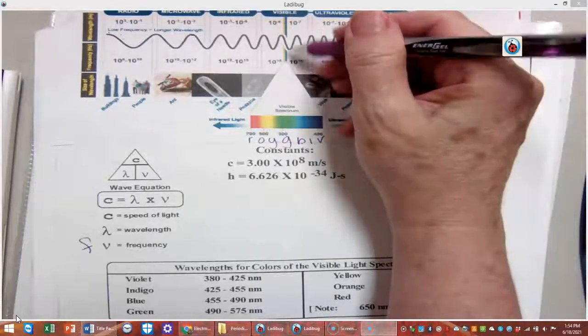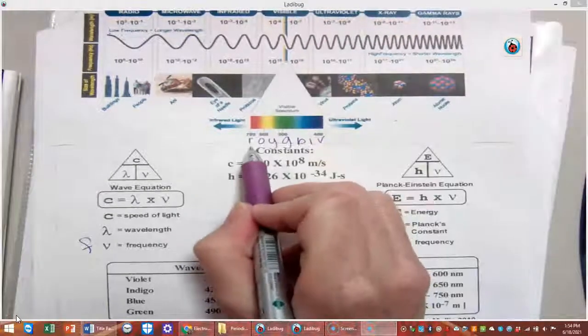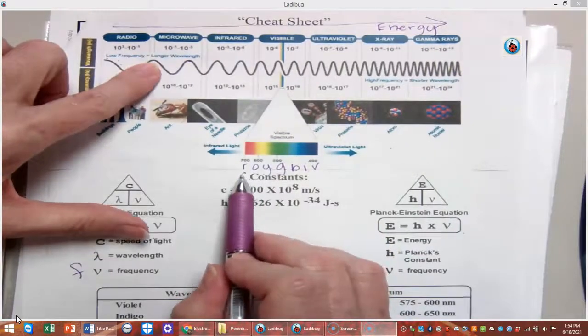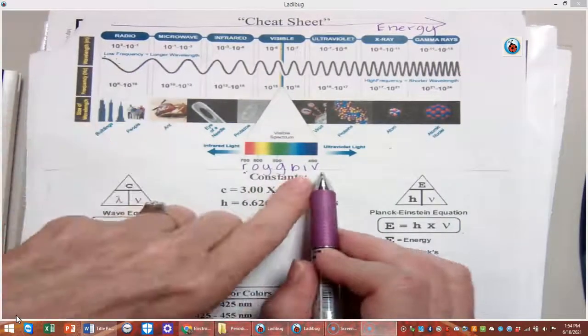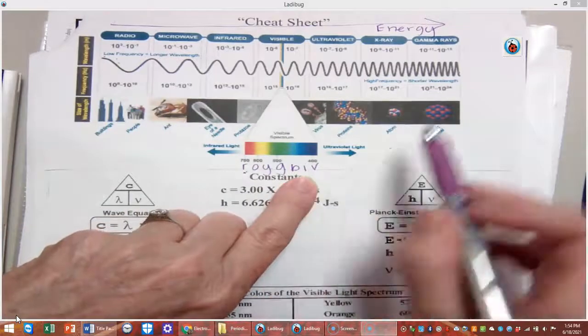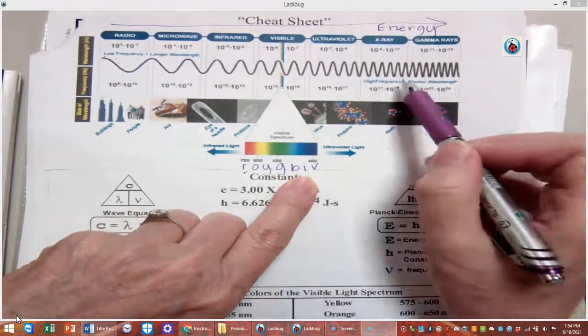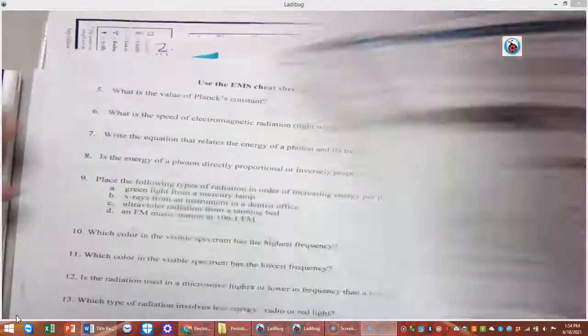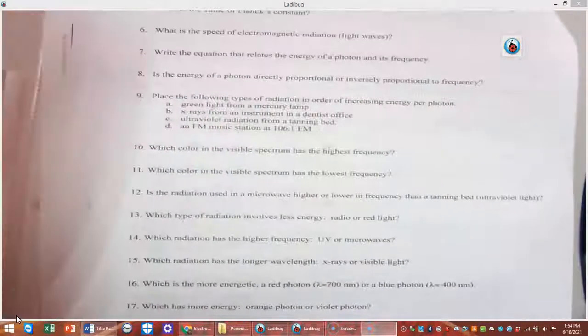So that's just this small spectrum here. So red has what, lower frequency, longer wavelength, lower energy. And as I come across, violet has shorter wavelengths, higher frequency, higher energy. So you should be able to answer all of these questions by yourself.